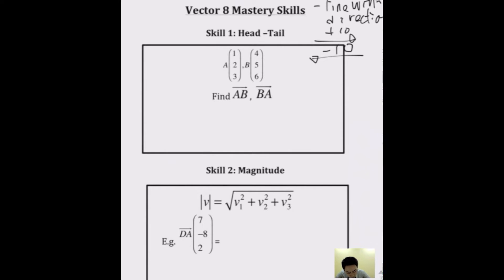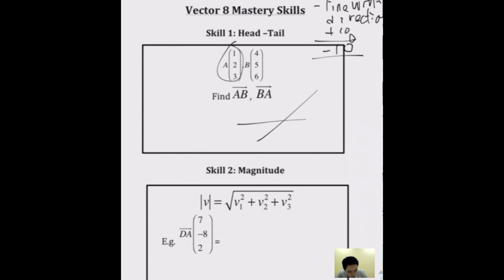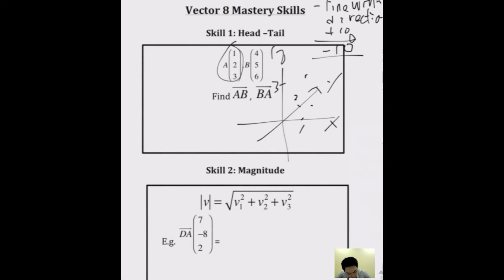Let's say point A — vector A is (1, 2, 3). On a 3D plane, X is 1, Y is 2, and Z is 3. So starting from the origin, the vector goes up to this point, and that is point A.